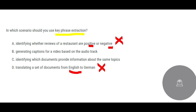Another option says: generate captions for a video. There is a video, audio is playing, and you are generating captions — for example, subtitles. When we are generating captions or subtitles, the translation and captioning needs to happen for the entire video, not just a few key phrases. So keyphrase extraction does not fit this scenario either — this is wrong.